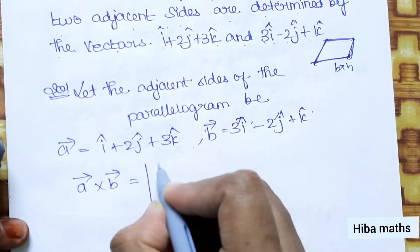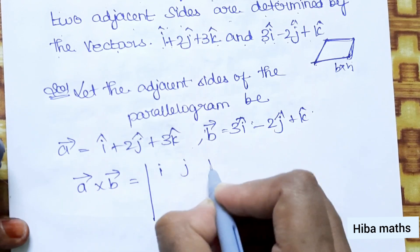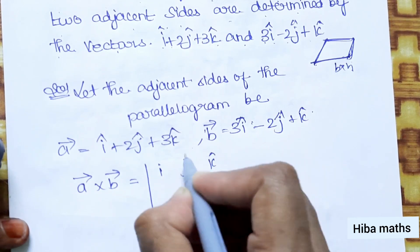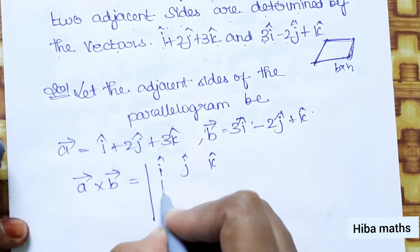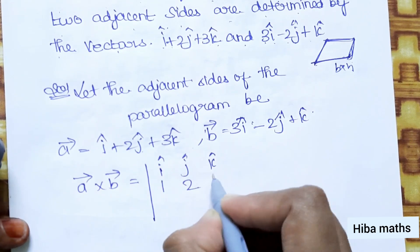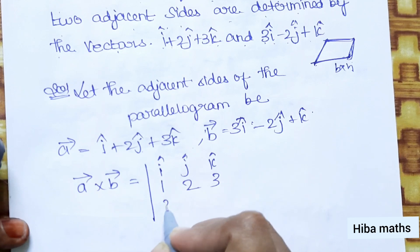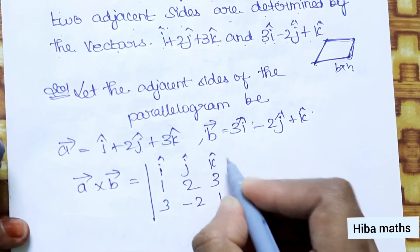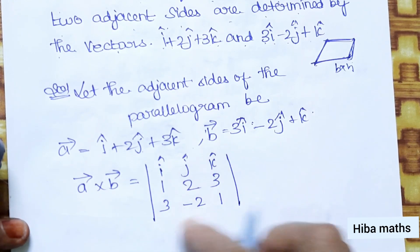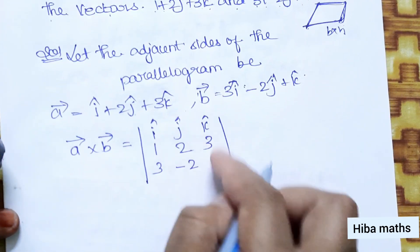In matrix form, the determinant is set up with first row i, j, k; second row 1, 2, 3; third row 3, −2, 1. Expanding: i into (2×1 − 3×(−2))...